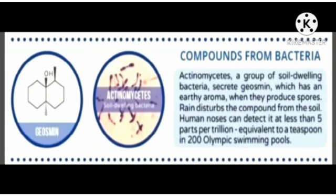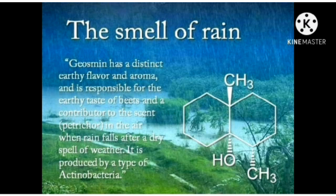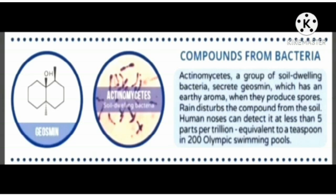The compounds from bacteria like Actinomycetes, a group of soil-dwelling bacteria, secrete geosmin, which has an earthy aroma when they produce spores. Rain disturbs the compound from the soil. Human noses can detect it at less than 5 parts per trillion, equivalent to a teaspoon in 200 Olympic swimming pools.